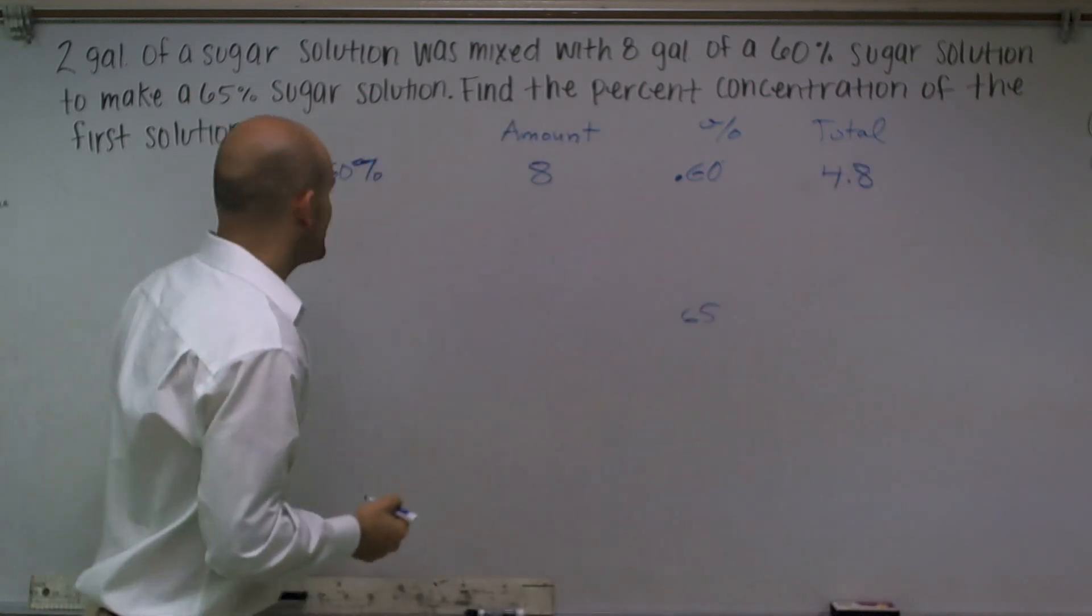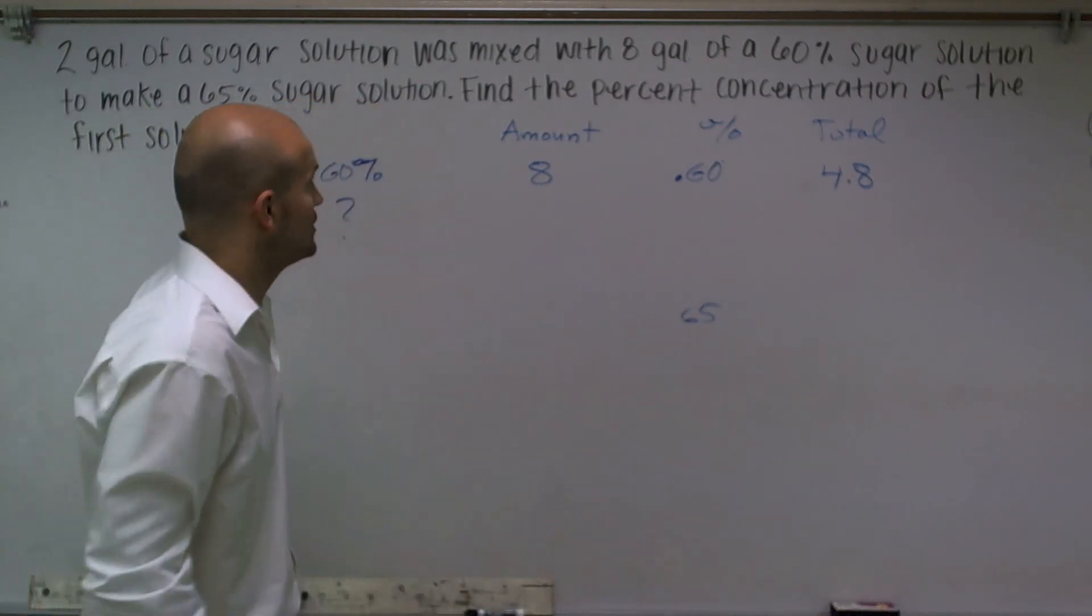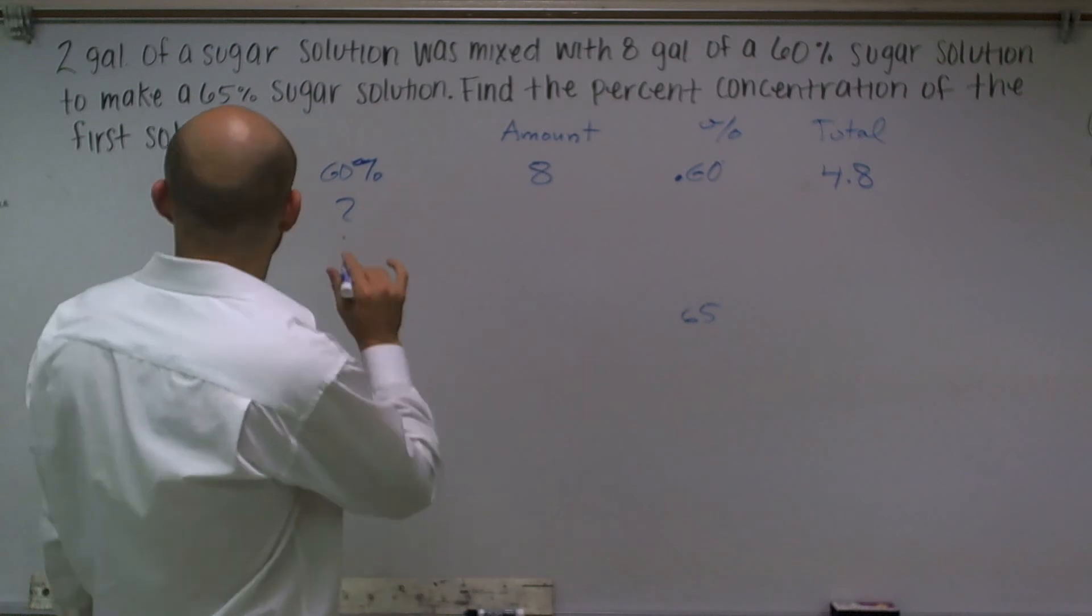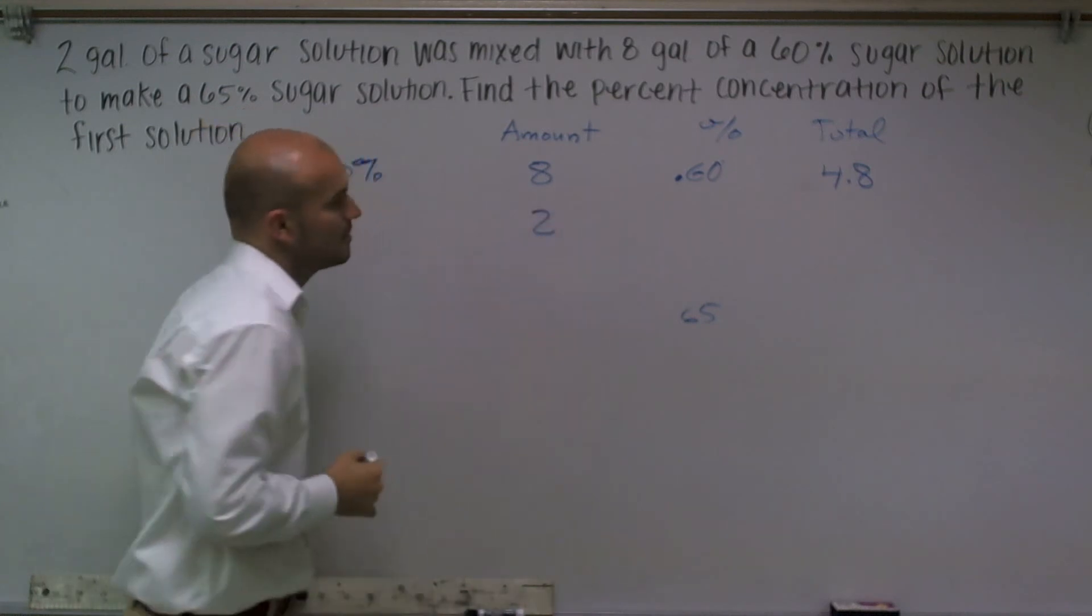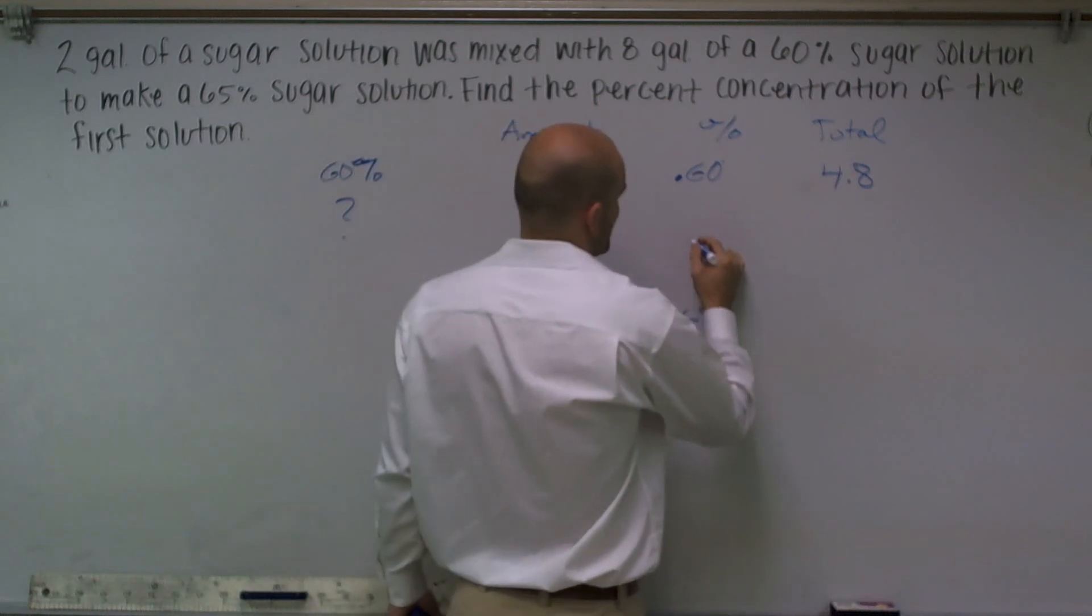Now, the next solution is what we call our mystery solution. We don't know what percent is going to be in that solution. So we do know that it's two gallons, but we don't know what the percentage is. So we're just going to say it's going to be X.